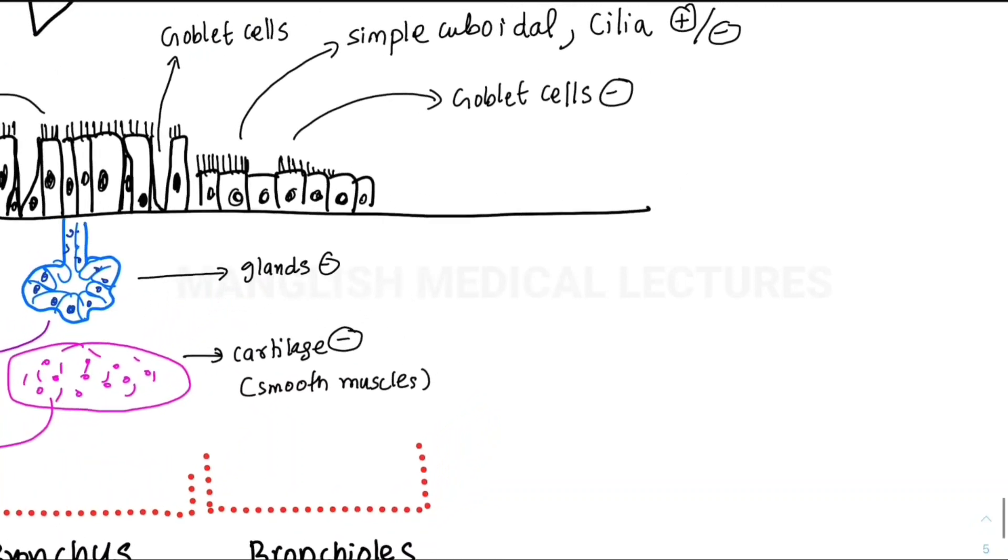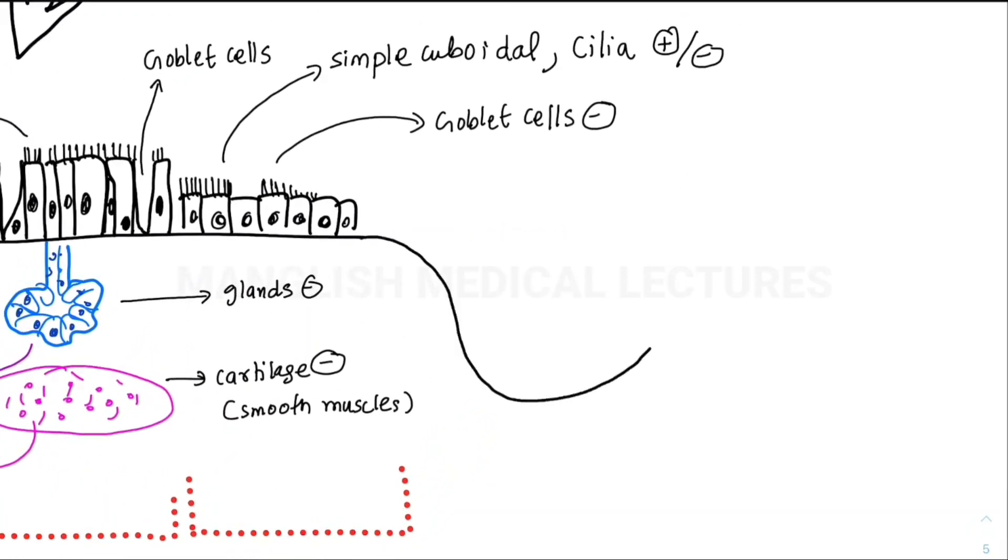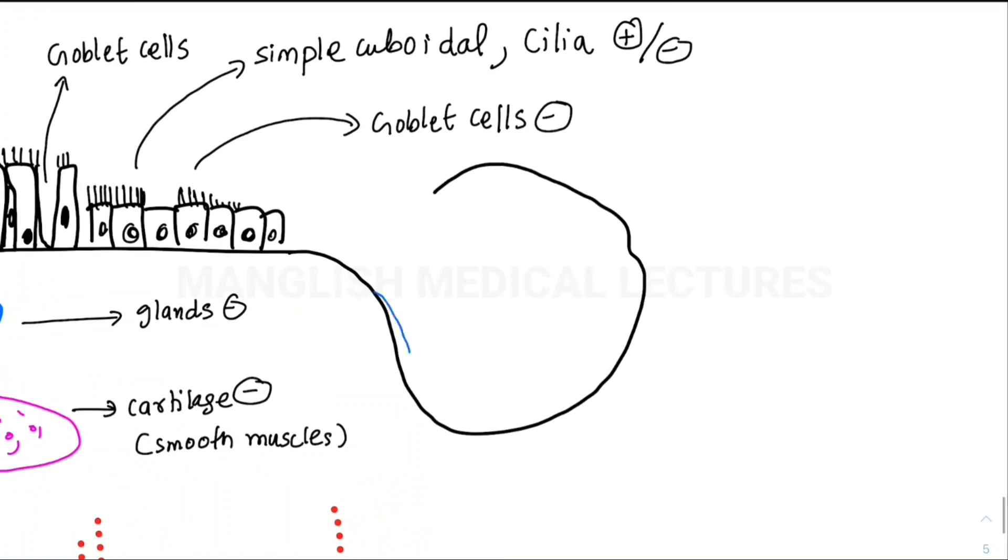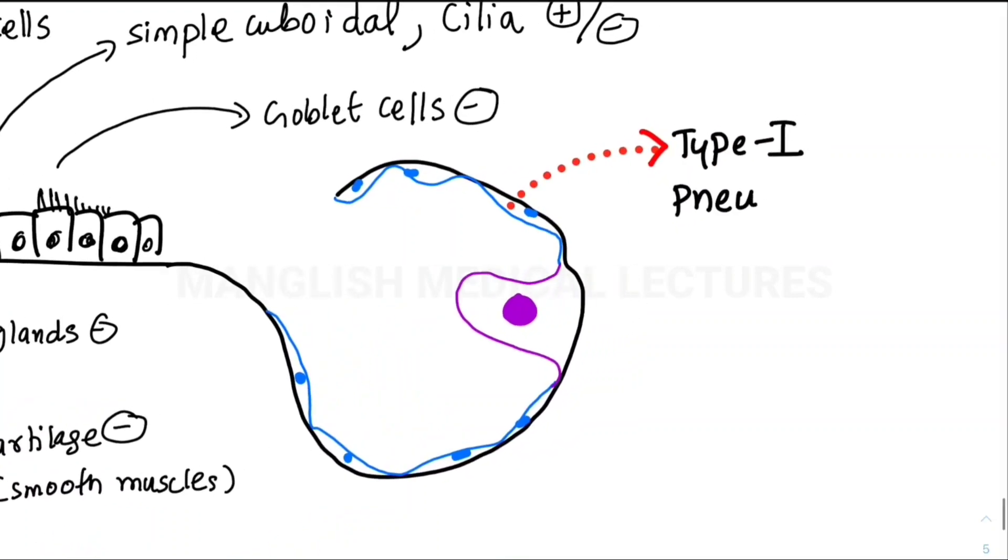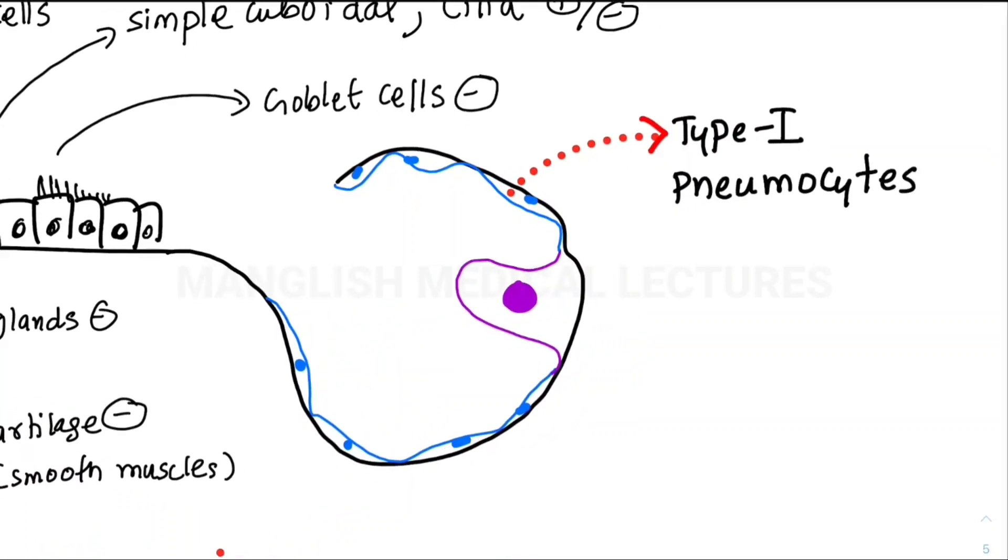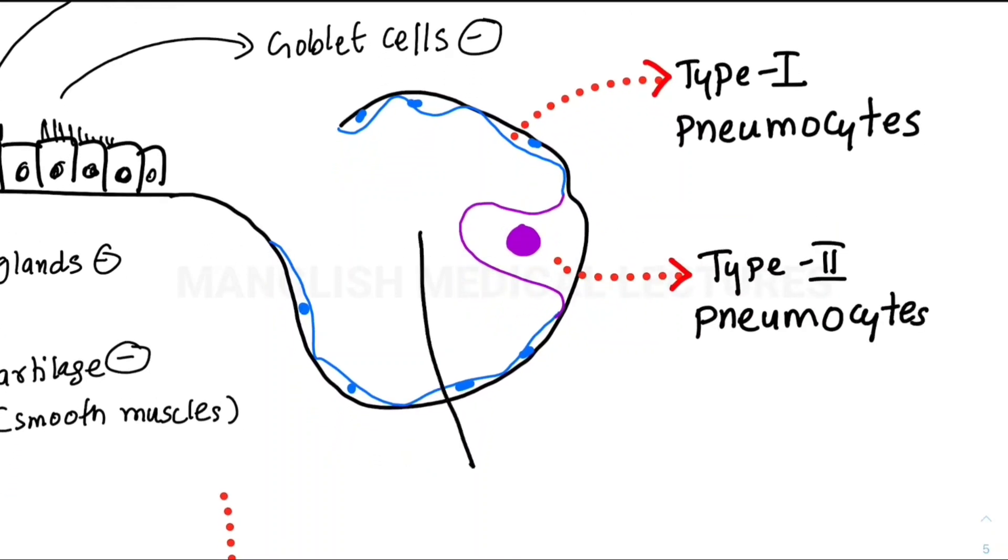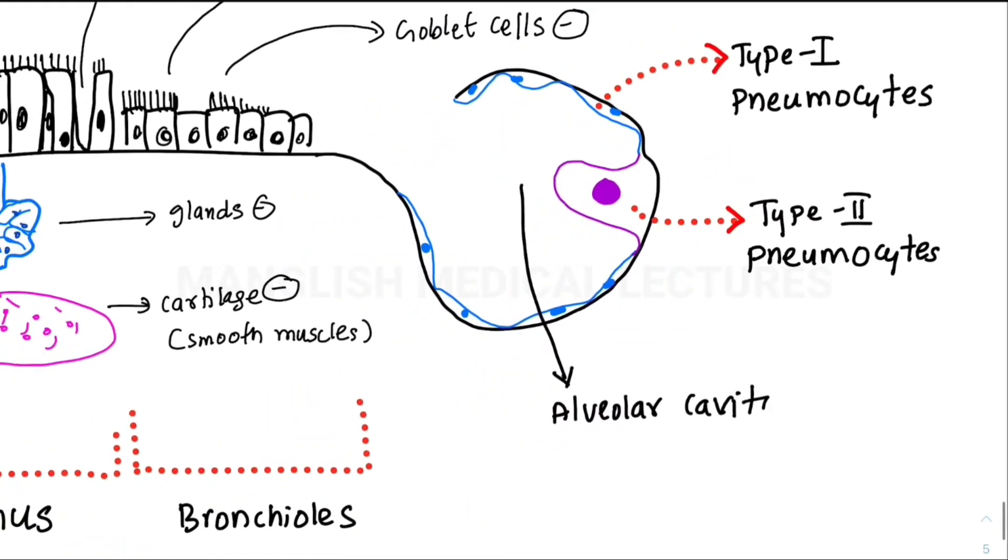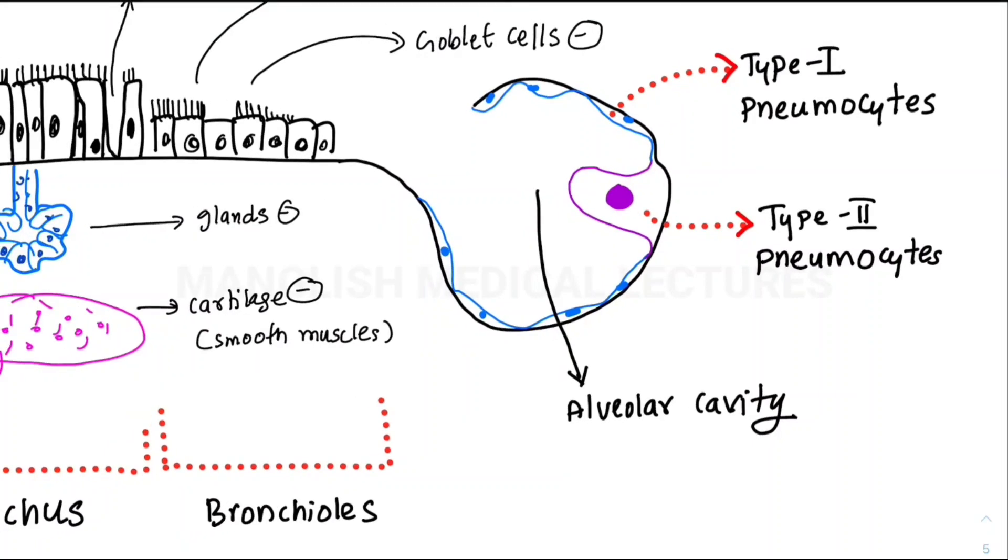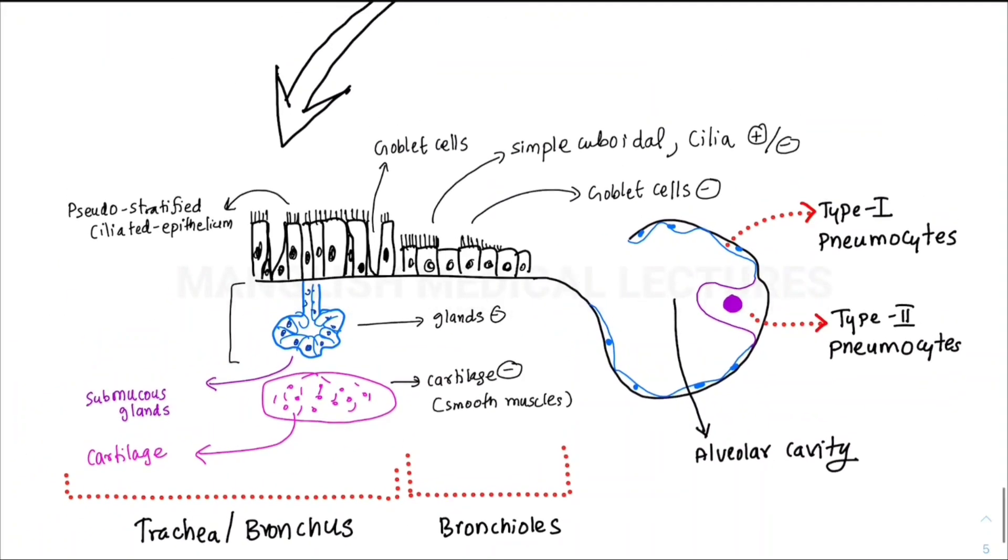Now we move to the final transition—alveoli. In the alveoli, we have two types of cells: very flat cells known as type 1 pneumocytes and circular cells with oval nucleus known as type 2 pneumocytes. Type 1 pneumocytes take part in gaseous exchange, and type 2 pneumocytes secrete surfactants. These cells line the alveolar cavity.